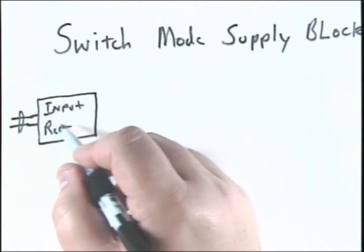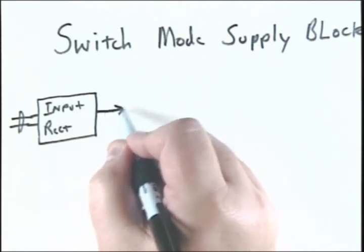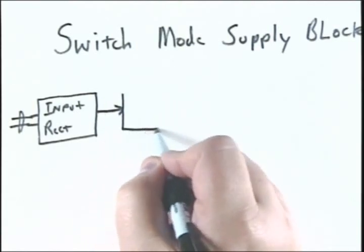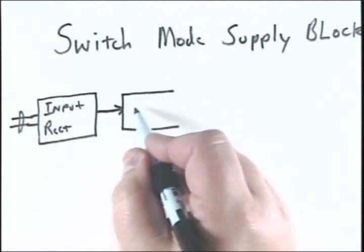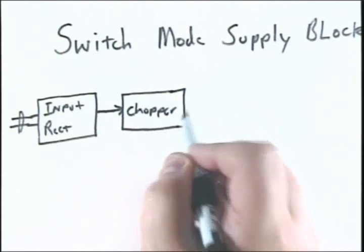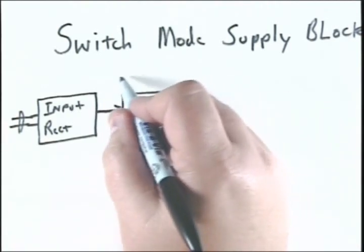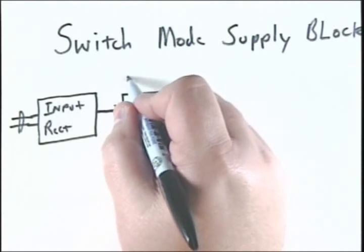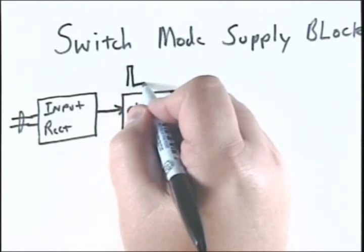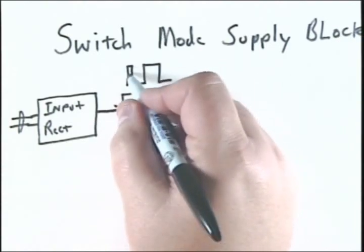Then we go into our next block, which is called the chopper. This is where the pulse would get modulated to be longer or shorter in height here and time duration to determine what the output DC would be.